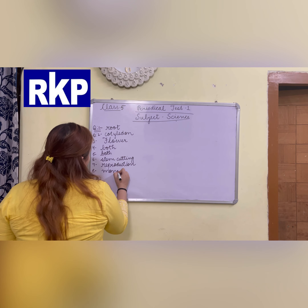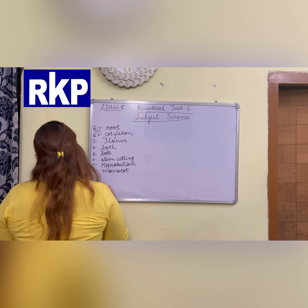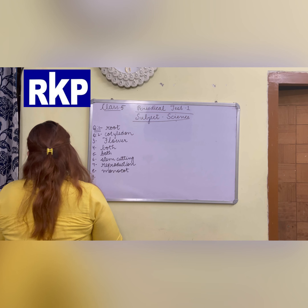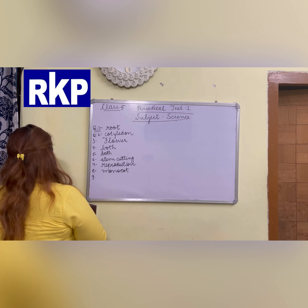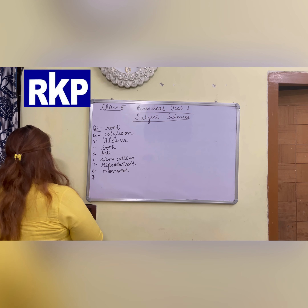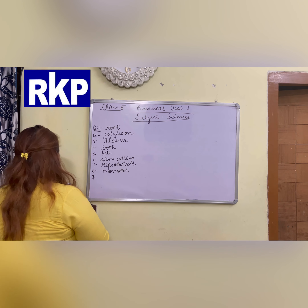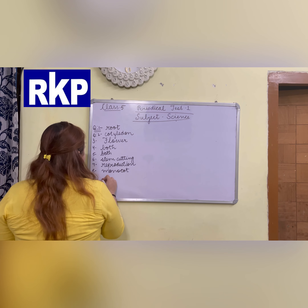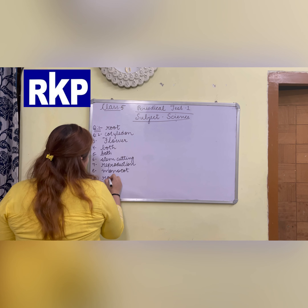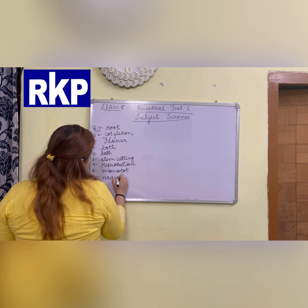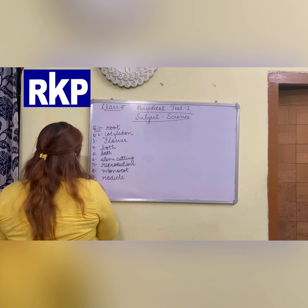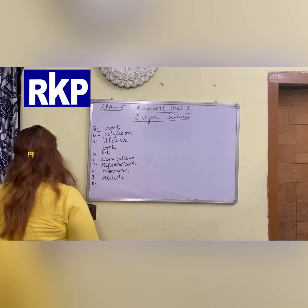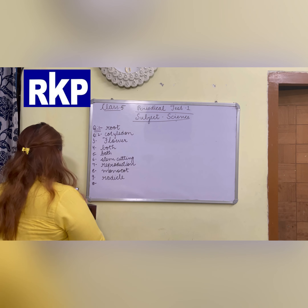Next: seeds like wheat, rice, and maize are which type of seeds? They are monocot seeds, because they contain only one cotyledon. Next: which of these develops into the root part of the plant? The answer is radicle. Radicle is the part of the embryo in the seed — it grows and develops into the root part of the plant.